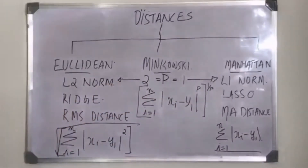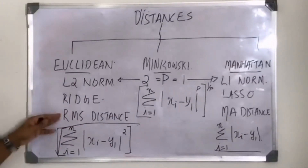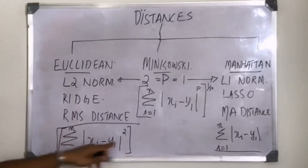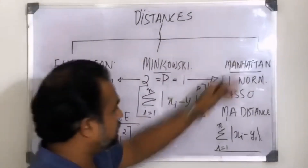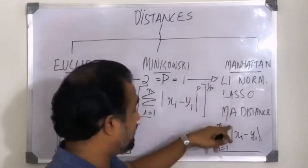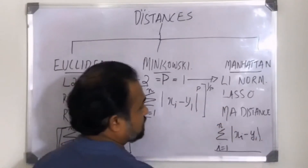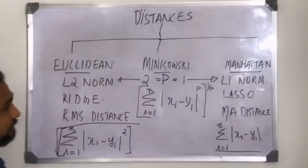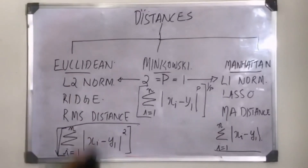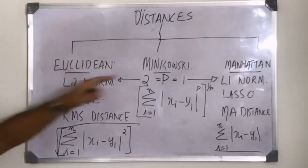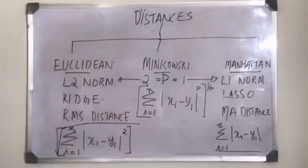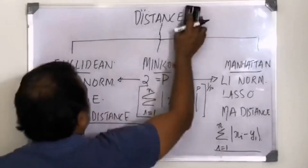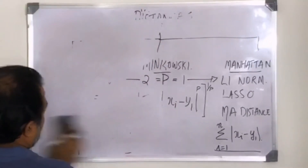To summarize: Euclidean distance, also called L2 norm, Ridge, or RMS distance, uses the formula — square root of the sum of squared differences. Manhattan distance, also called L1 norm, Lasso, or mean absolute distance, is just the absolute distance between two points summed across all dimensions. Now that we understand the formulas, let's look at these individually with examples.